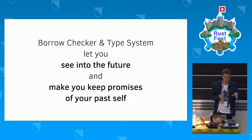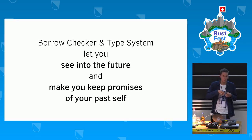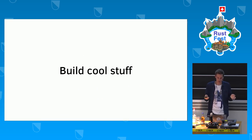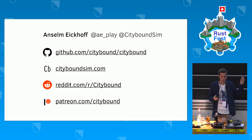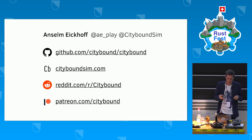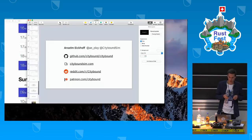The borrow checker and type system are your best friends for this because they both let you see into the future and make you keep the promises your past self made. For example, you can change one core essential part of your project and it will immediately show you through errors everything that will be affected. And if you start drafting a new system just with types, then start implementing it, the borrow checker and type system will be there to make sure you actually follow your plan. In general, build cool stuff — this is such an amazing community. Check out Citybound open source on GitHub, citybound.sim.com, the community on Reddit, and if you like city-building games, consider becoming a patron. Thank you all very much for your attention.